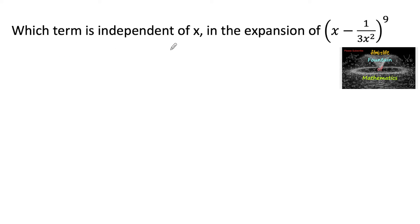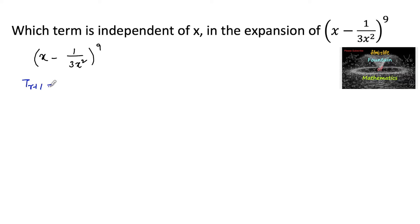Which term is independent of x in the expansion of (x minus 1 upon 3x squared) whole to the power 9? Let us consider the general term. We have T(r+1) is equal to nCr times x to the power of (n minus r) into a to the power of r, in the expansion of (x plus a) whole to the power n.